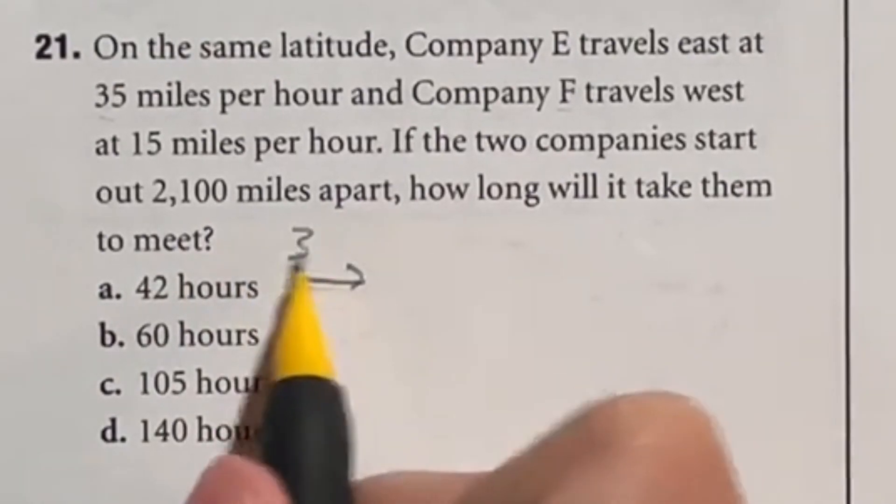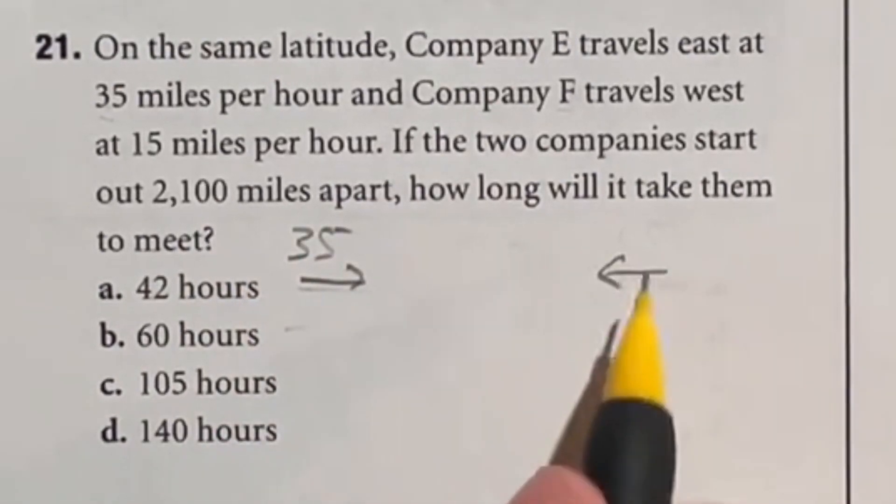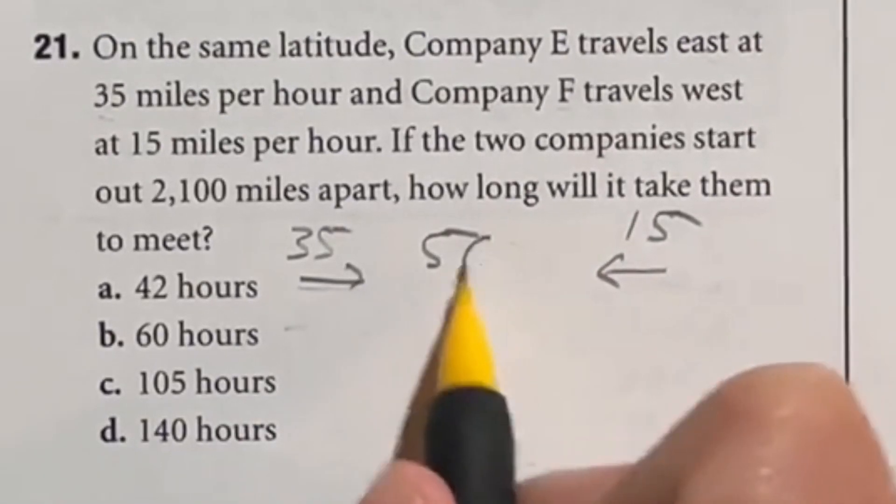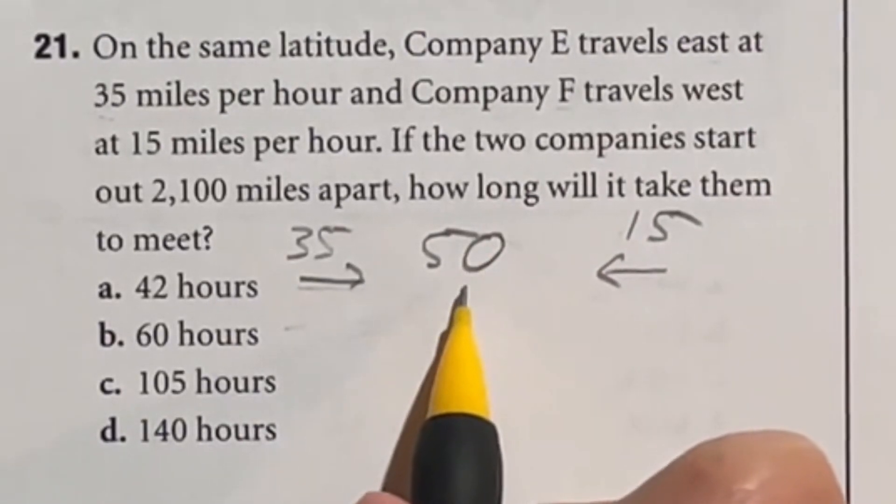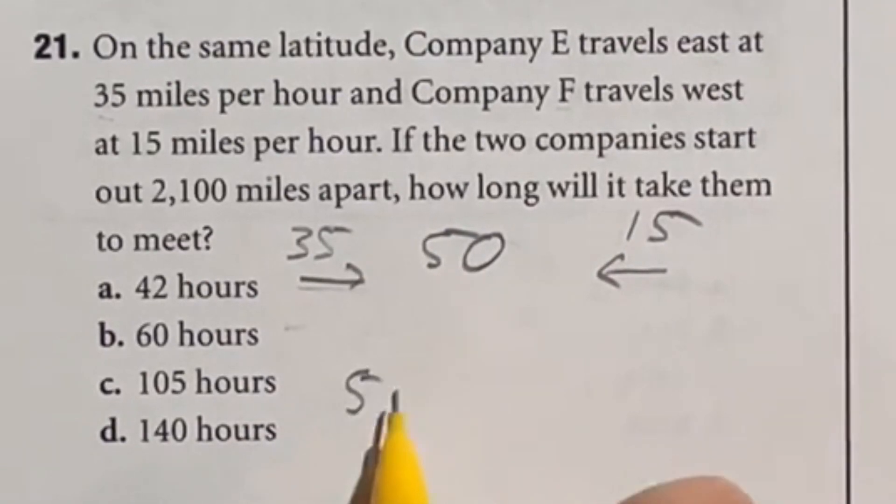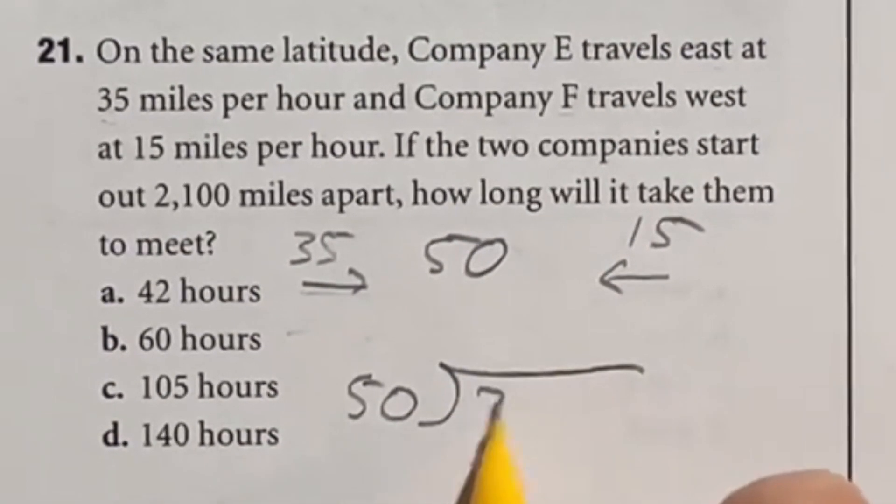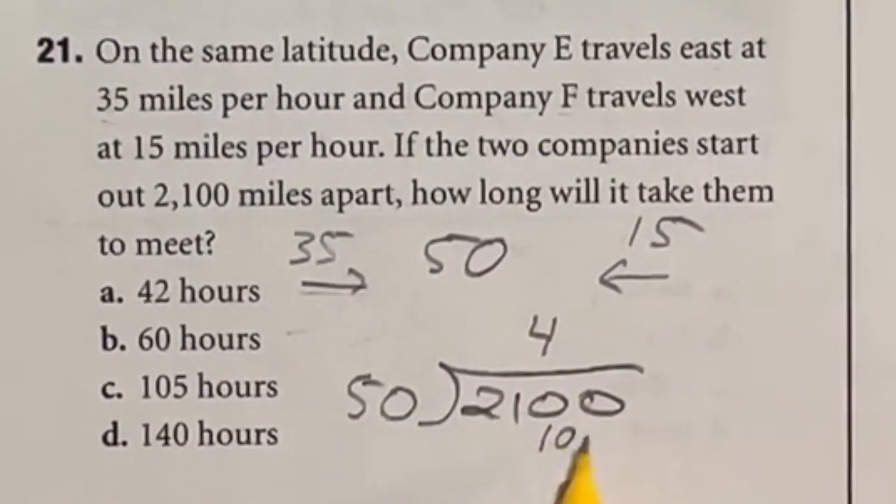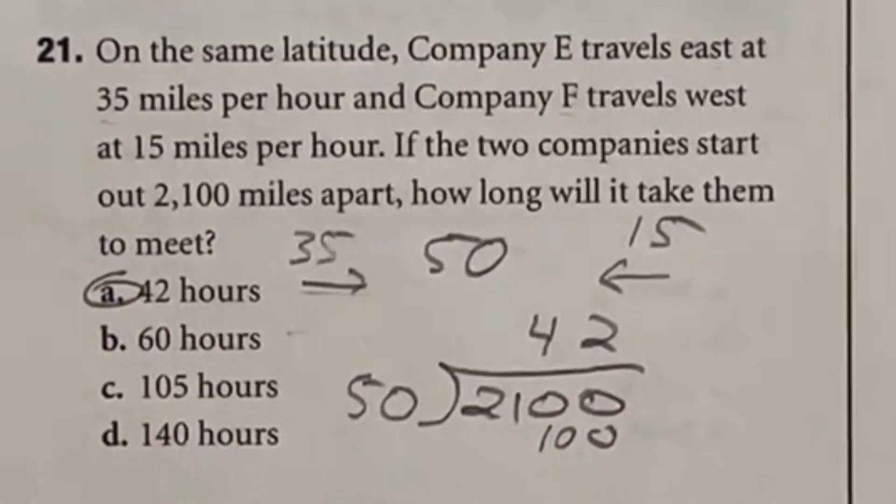Well if one company is going 35 miles in this direction and the other is going 15 in this direction, together they're going to be getting 50 miles closer every hour. So now what we need to do is see how many times 50 goes into that 2100. Well 50 goes into 200 four times with 10 left over. Bring that zero down. 50 goes into 100 two times meaning that our answer here is A.